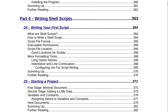Part 4 is Writing Shell Scripts on page 363. Section 24 is Writing Your First Script on page 364. That covers what are shell scripts, how to write a shell script, script file format, executable permissions, script file location, good locations for scripts, more formatting tips, long option names, indentation and line continuation, configuring Vim for script writing, summing up, and further reading.